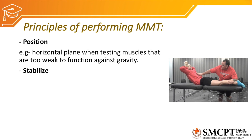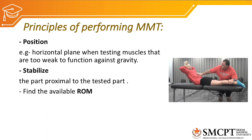The next important principle is stabilization. The part proximal to the tested joint should always be stabilized so that the patient gets freedom of movement without losing balance. As shown in the picture, the therapist is stabilizing the lower limb so the patient can perform trunk extension. The next principle is to find the available range of motion by performing passive range of motion and measuring it with goniometry.